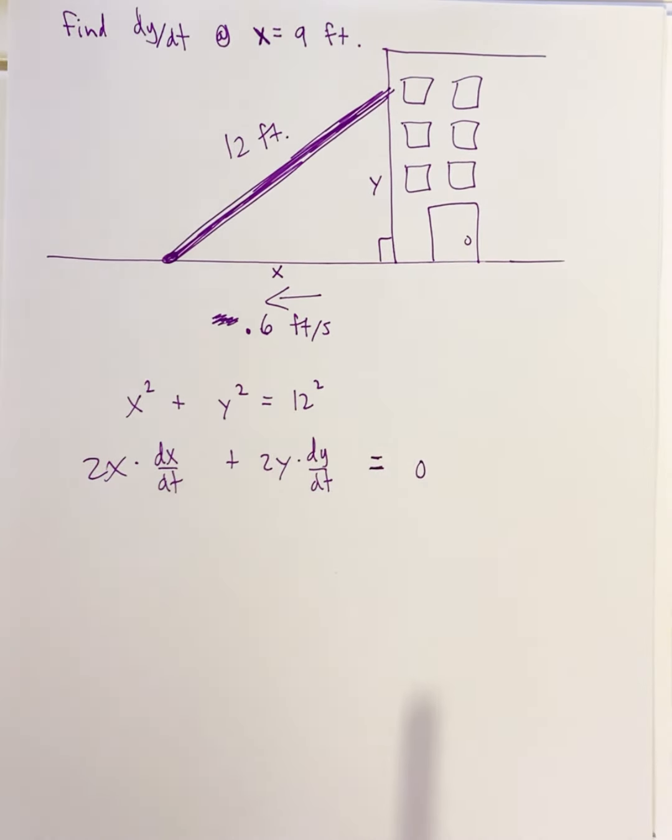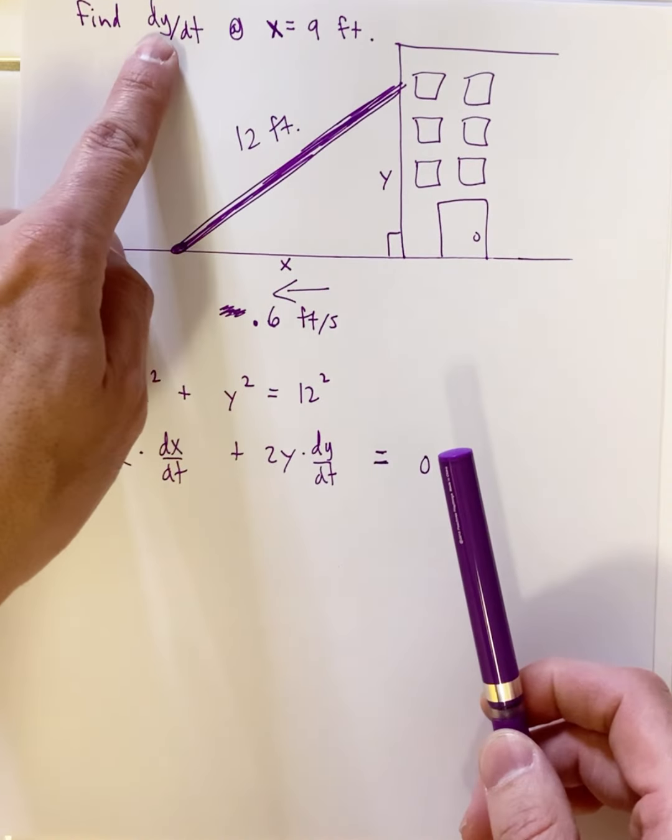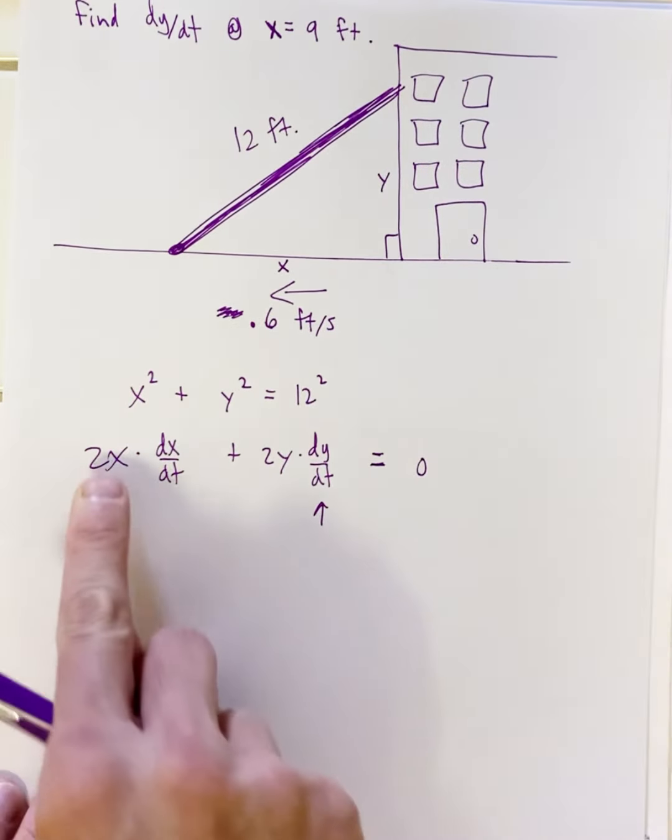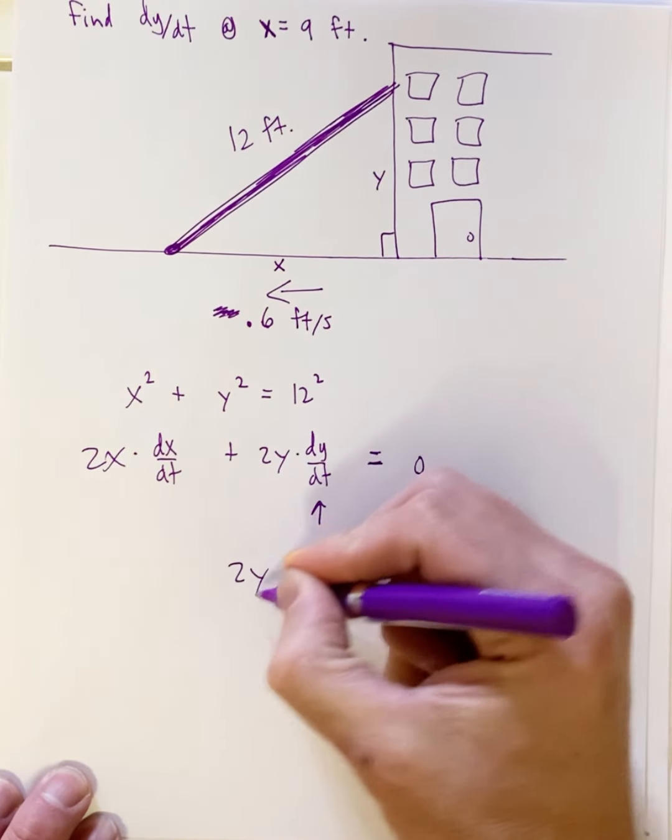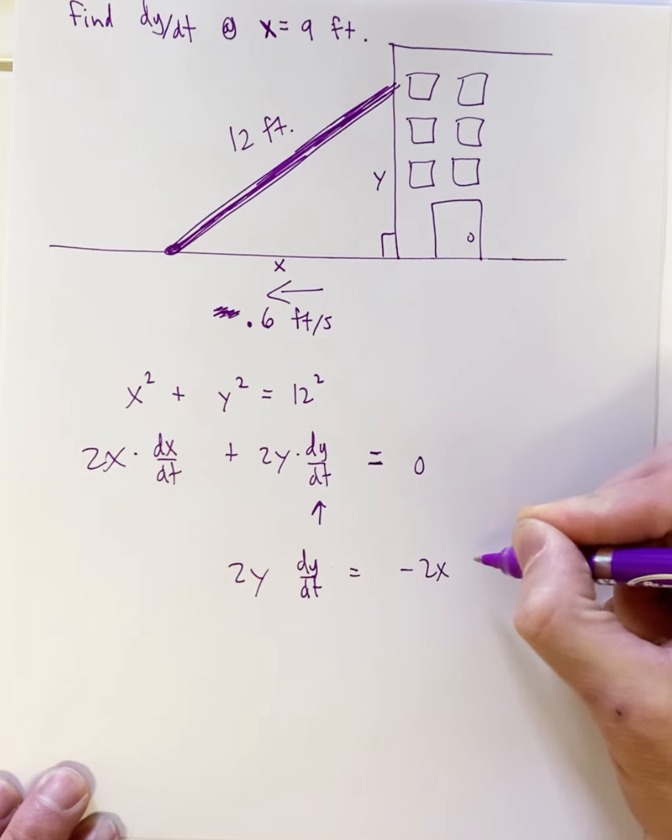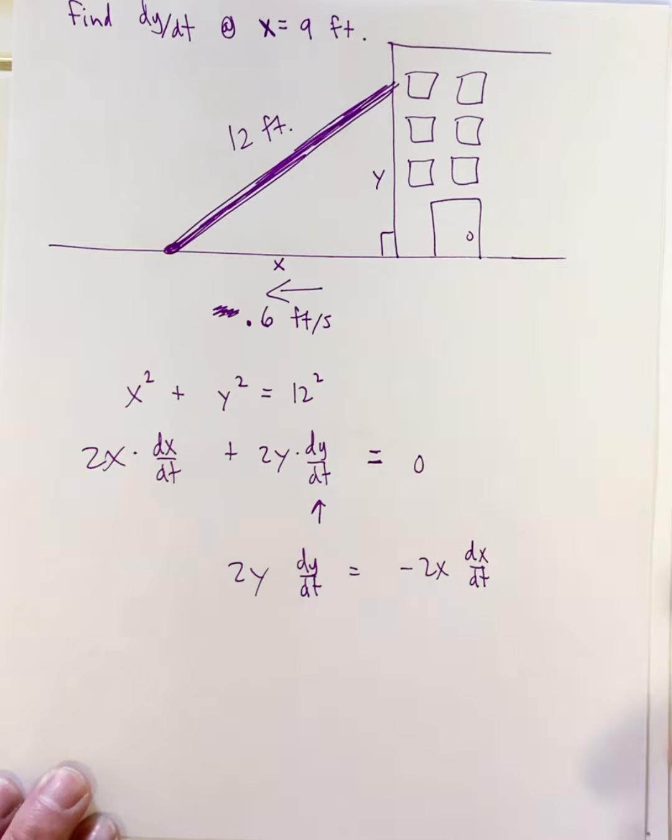Now what are we trying to do? We want to solve, we want to find dy/dt, so let's get this by itself. Let me subtract that to that side. I'd have 2y dy/dt equals negative 2x dx/dt. I subtracted this to that so that's why it's negative.